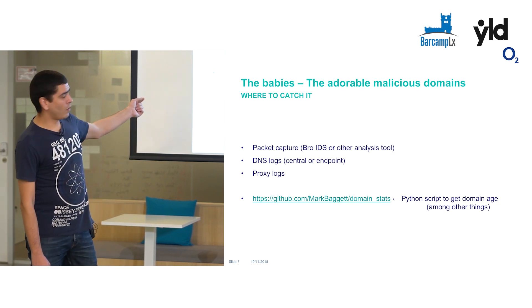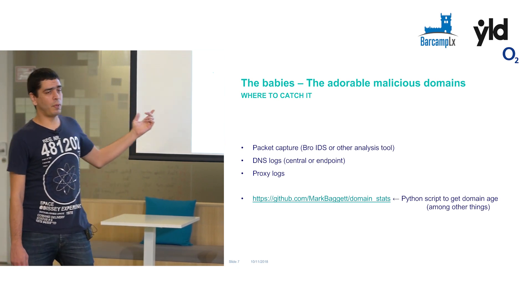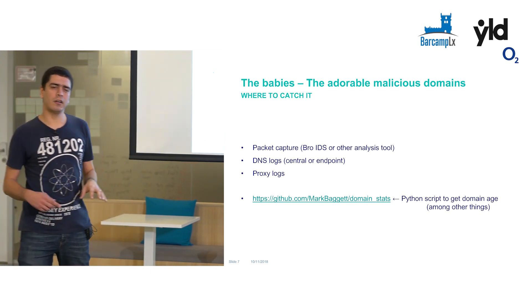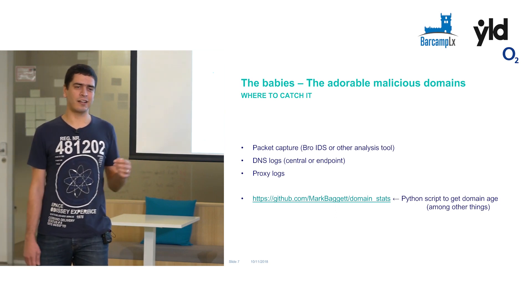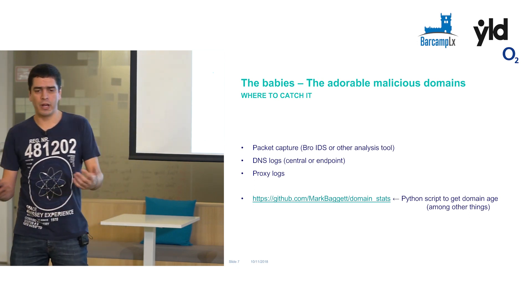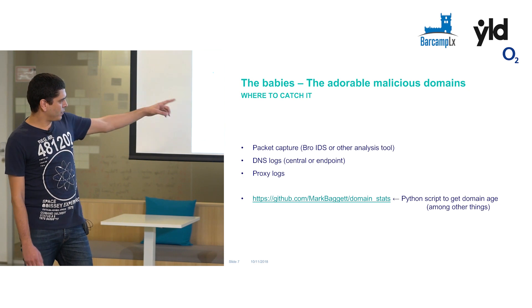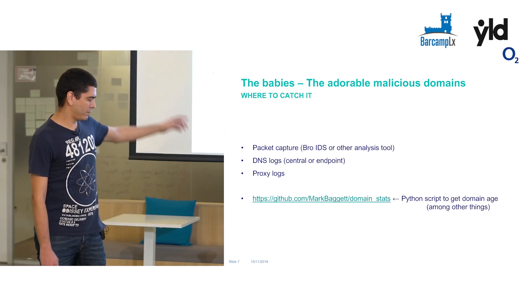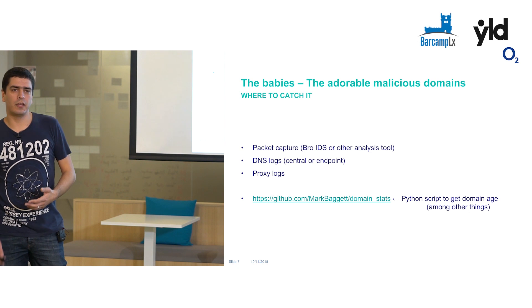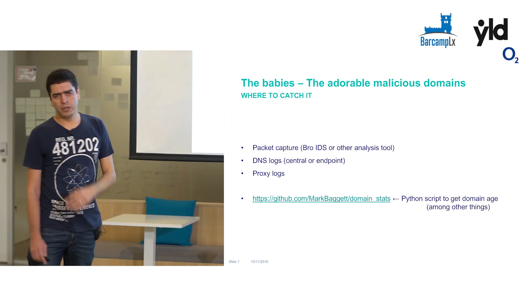You can also get it on the HTTP traffic via your proxy logs, if you have a proxy on your network, or if you're using packet capture. On HTTP it might be a bit harder, because if they're using HTTPS, good luck trying to see what's going on — you can still see the domain, but finding out exactly what happened after the initial access is difficult. This Python script, which I've put the GitHub URL for, allows you to query a domain for a lot of data — creation date, last time it got updated, who the owner is, and stuff like that.